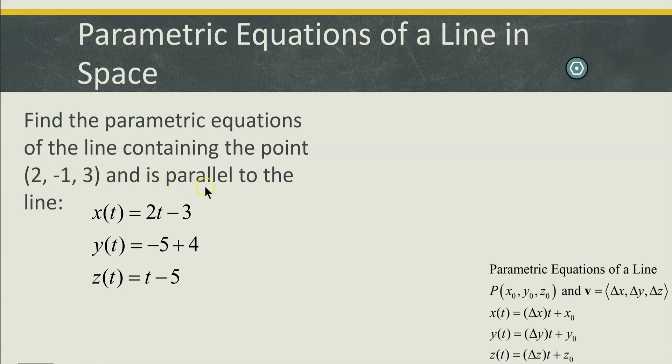And the line is parallel to the line x of t equals 2t minus 3, y of t equals negative 5t plus 4, and z of t equals t minus 5.